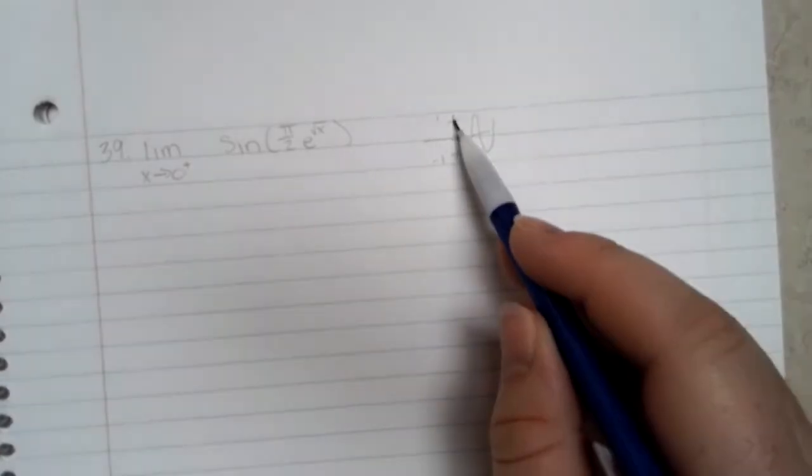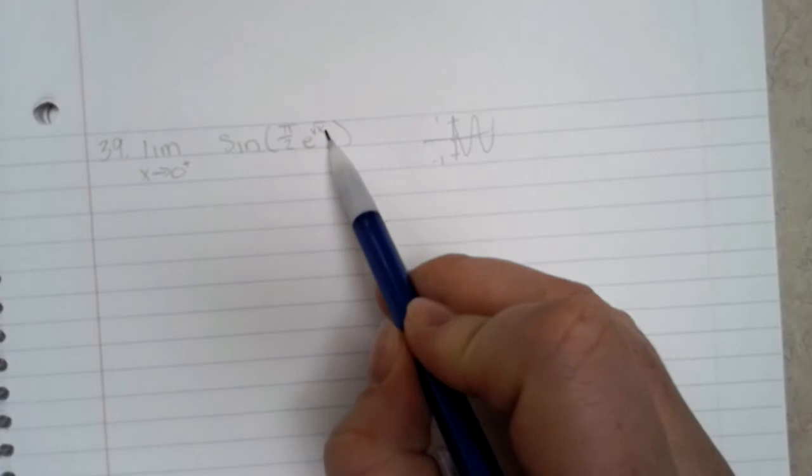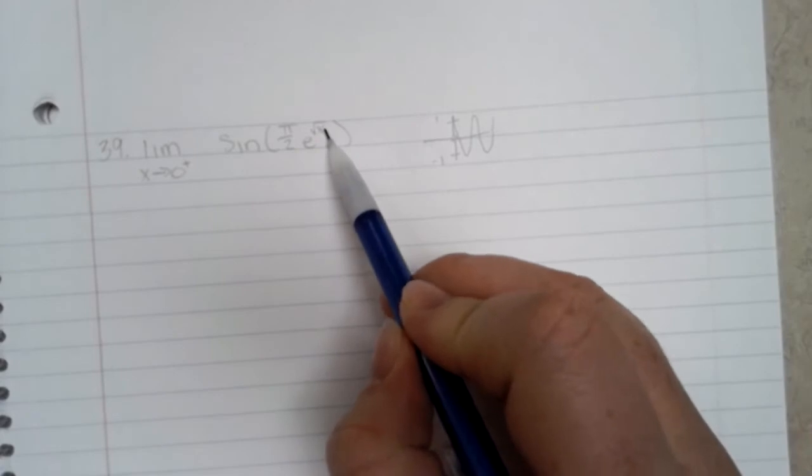And it just keeps on going. So when you're approaching it from the right it is continuous, but from the left it's not. And the only reason is because when you put a negative number into your square roots it doesn't exist.